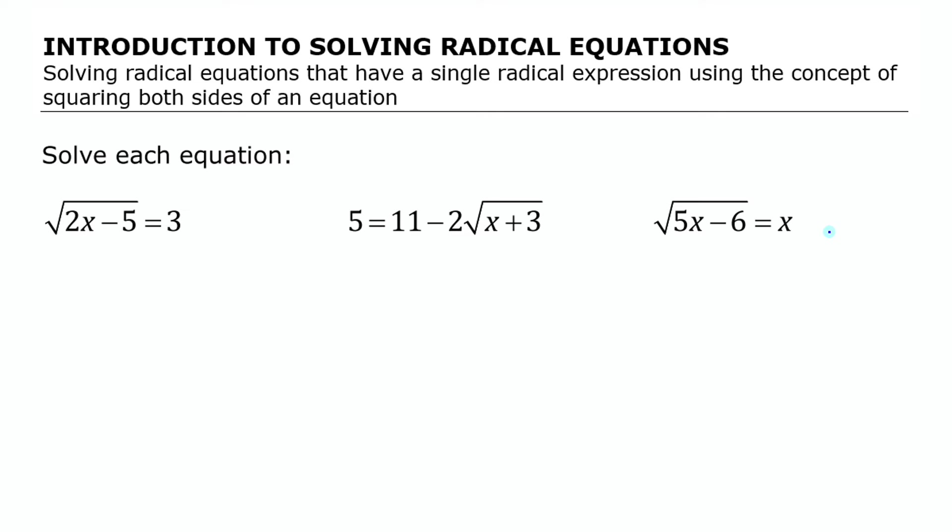To solve them, we're going to use inverse operations to isolate the variable. Starting with this first one here. This says the square root of something is equal to 3. The something is highlighted in yellow there. If the square root of something is equal to 3, then I can use inverse operations. The inverse of taking the square root of something is squaring that thing.